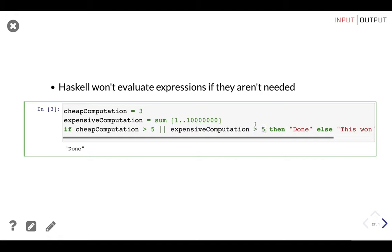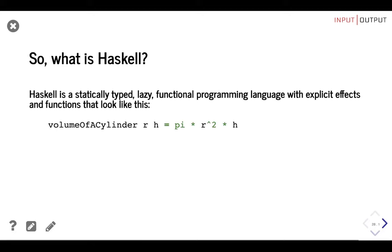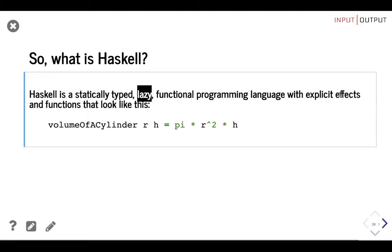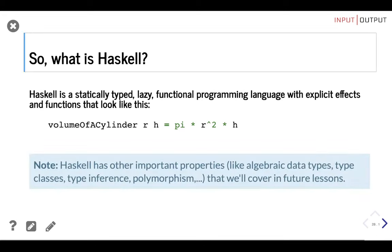So, what is Haskell? Haskell is a statically typed, lazy, functional programming language with explicit effects. Laziness and explicit effects are the most unique properties of Haskell. Haskell also has other important properties like algebraic data types, type classes, type inference, and polymorphism that we will cover in future lessons.